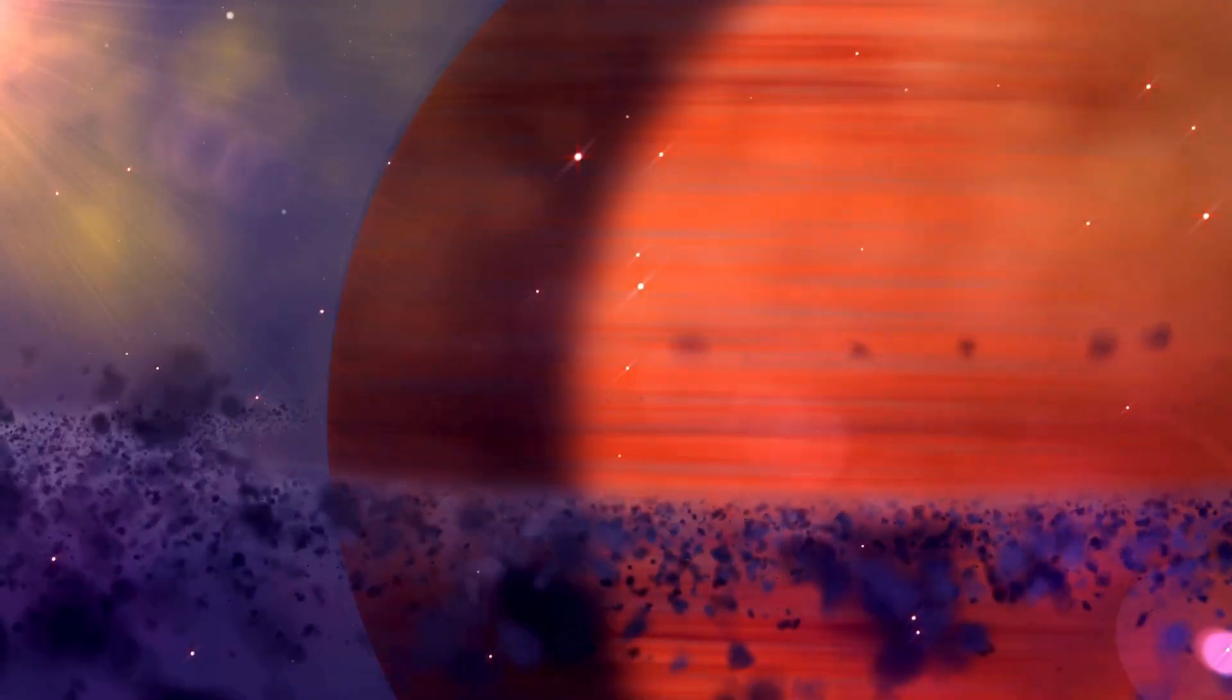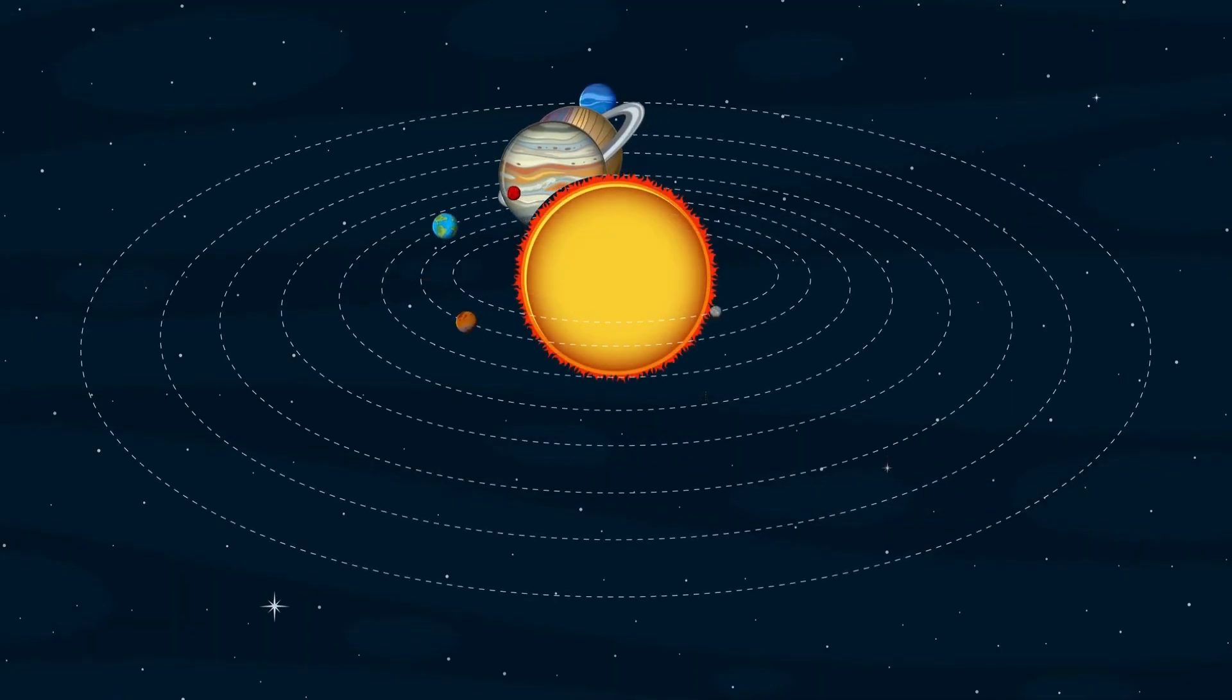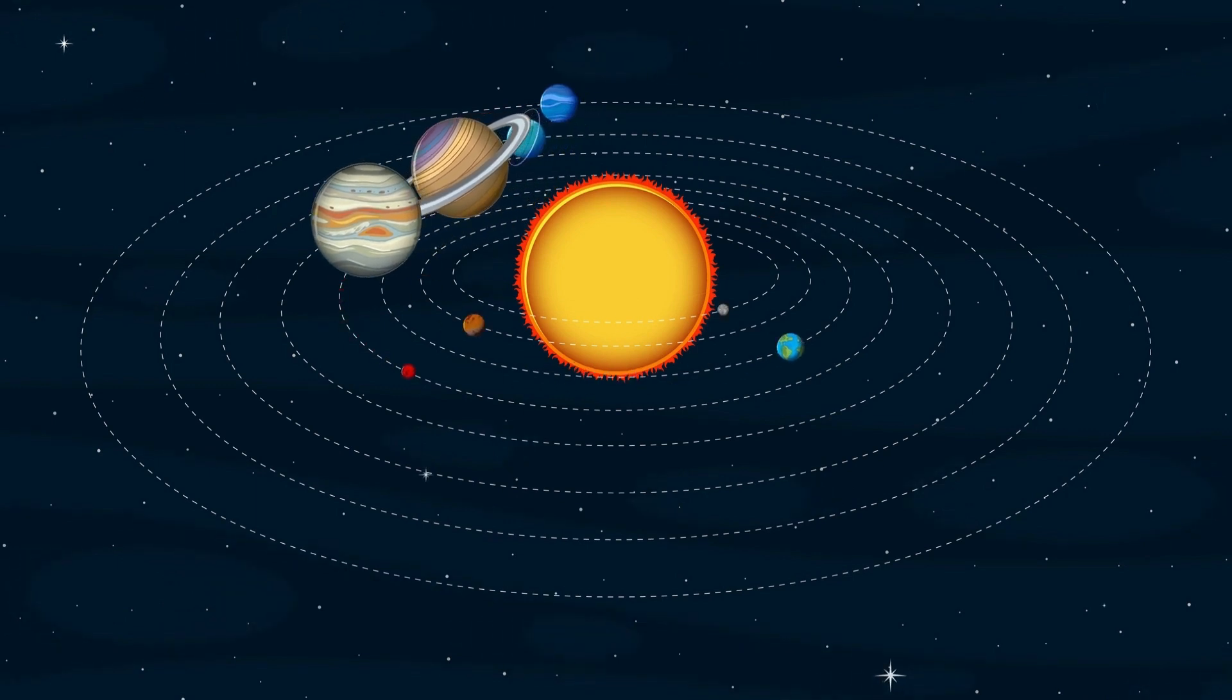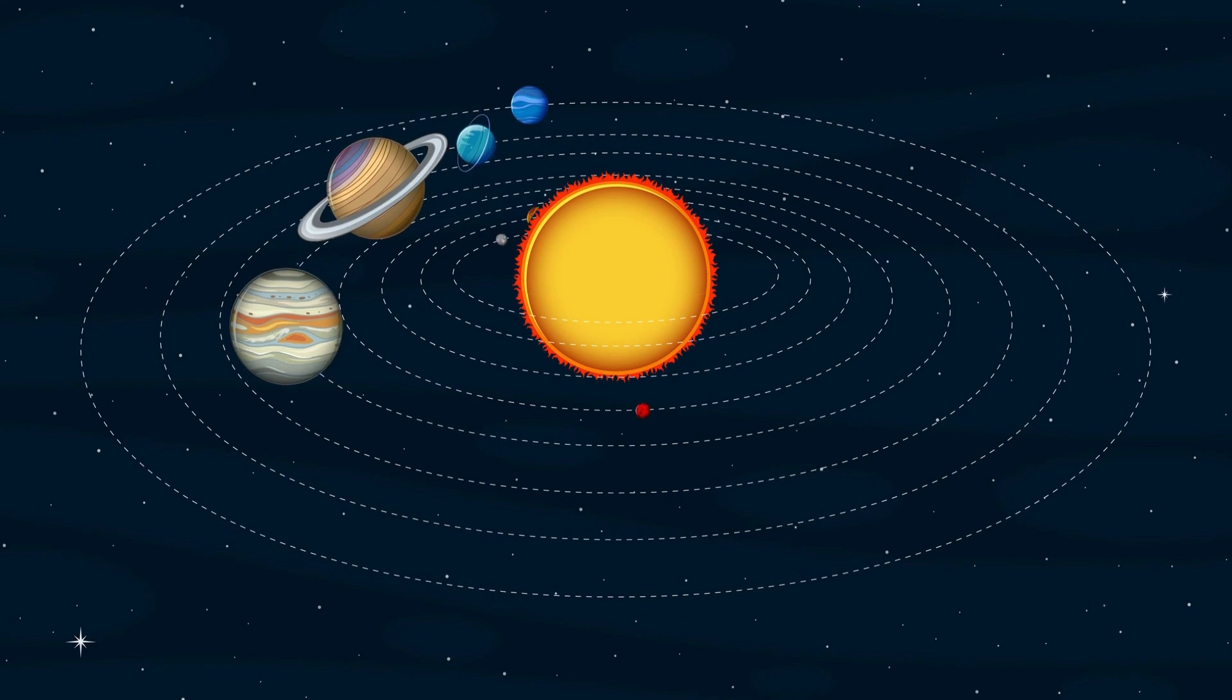This leads to the natural question: why hasn't Pluto collided with Neptune? The answer lies in the gravitational influences of other planets. The study of Pluto's orbit began soon after its discovery. Initially, astronomers struggled to understand its unique trajectory.